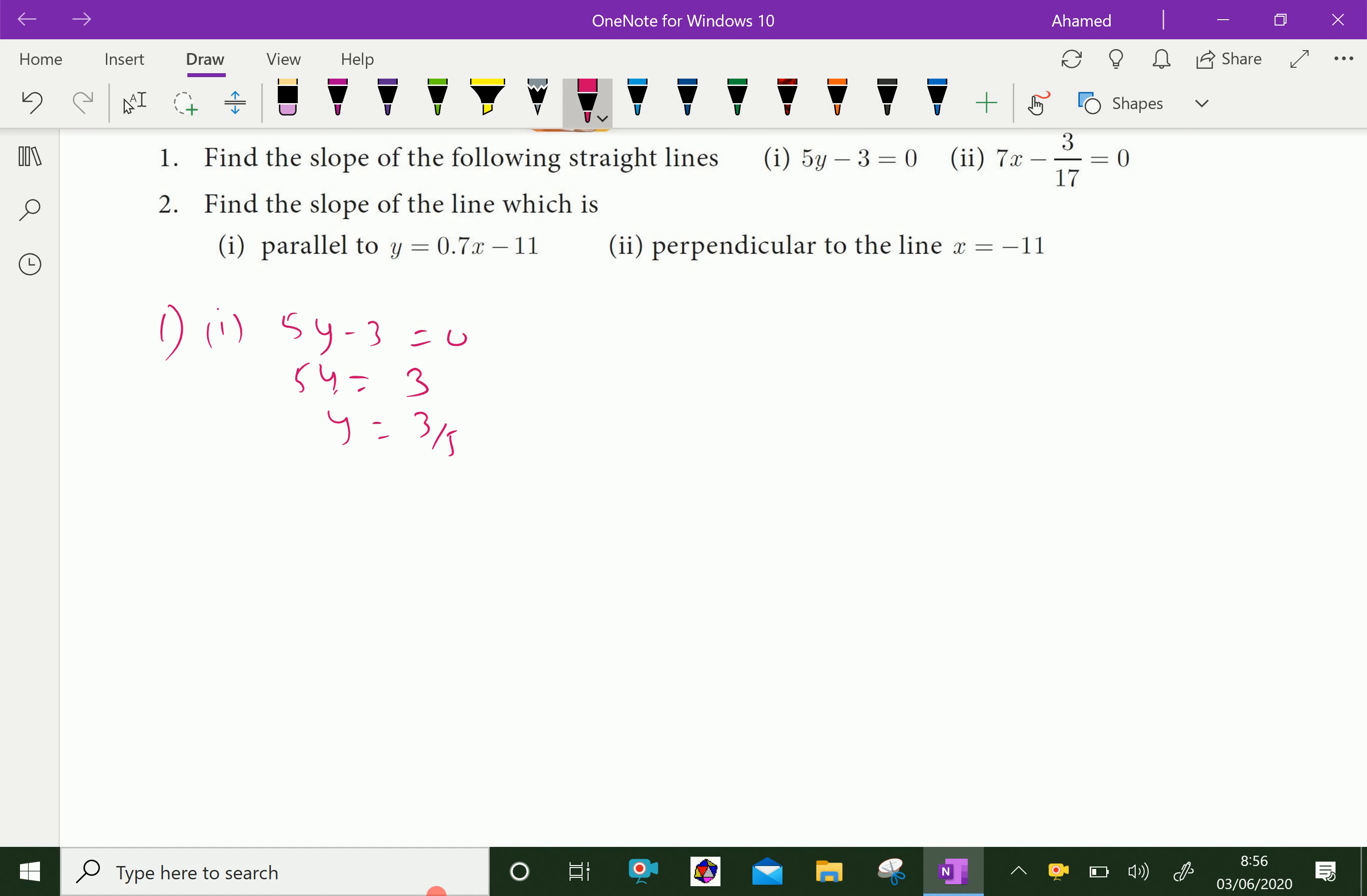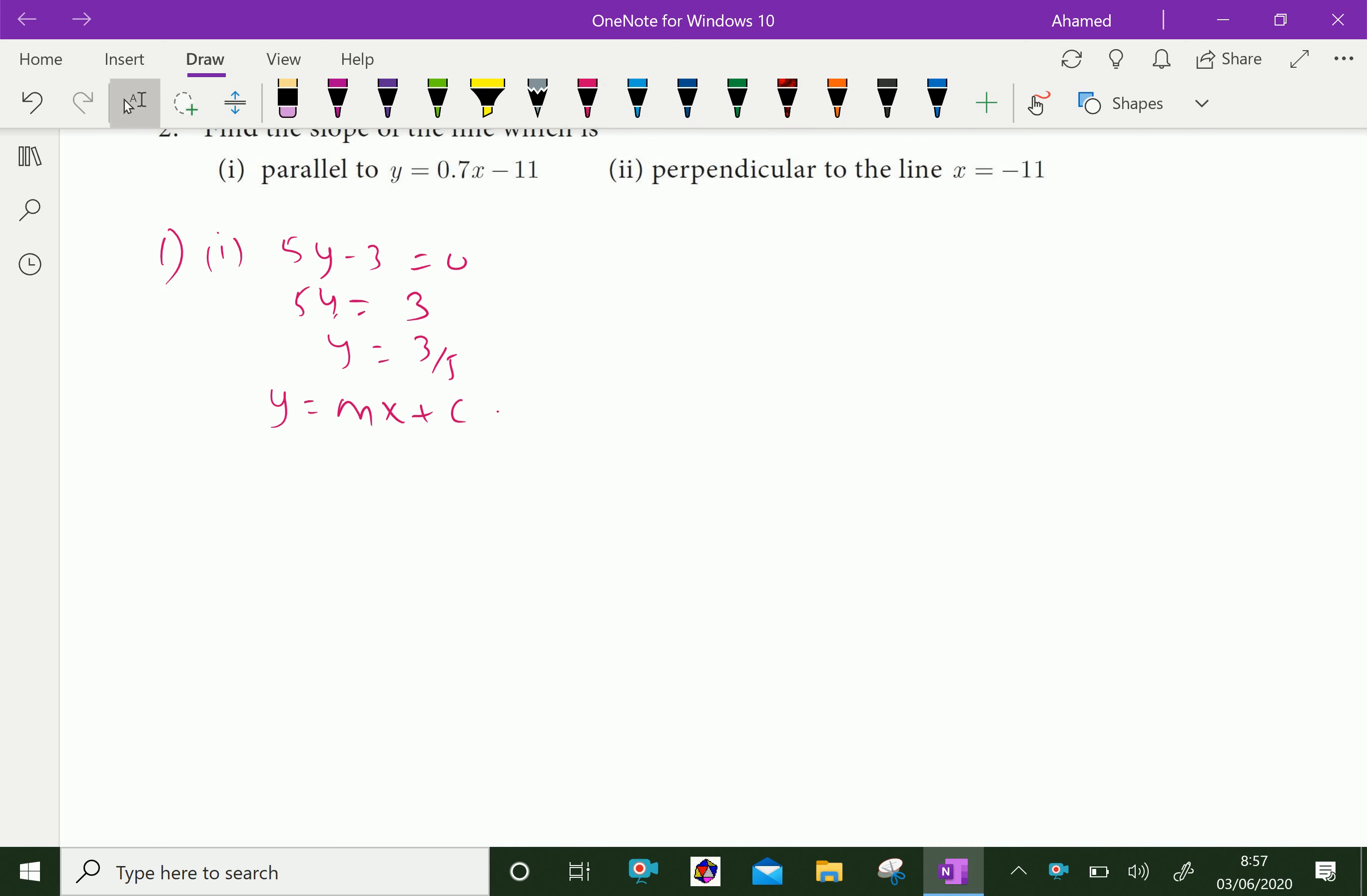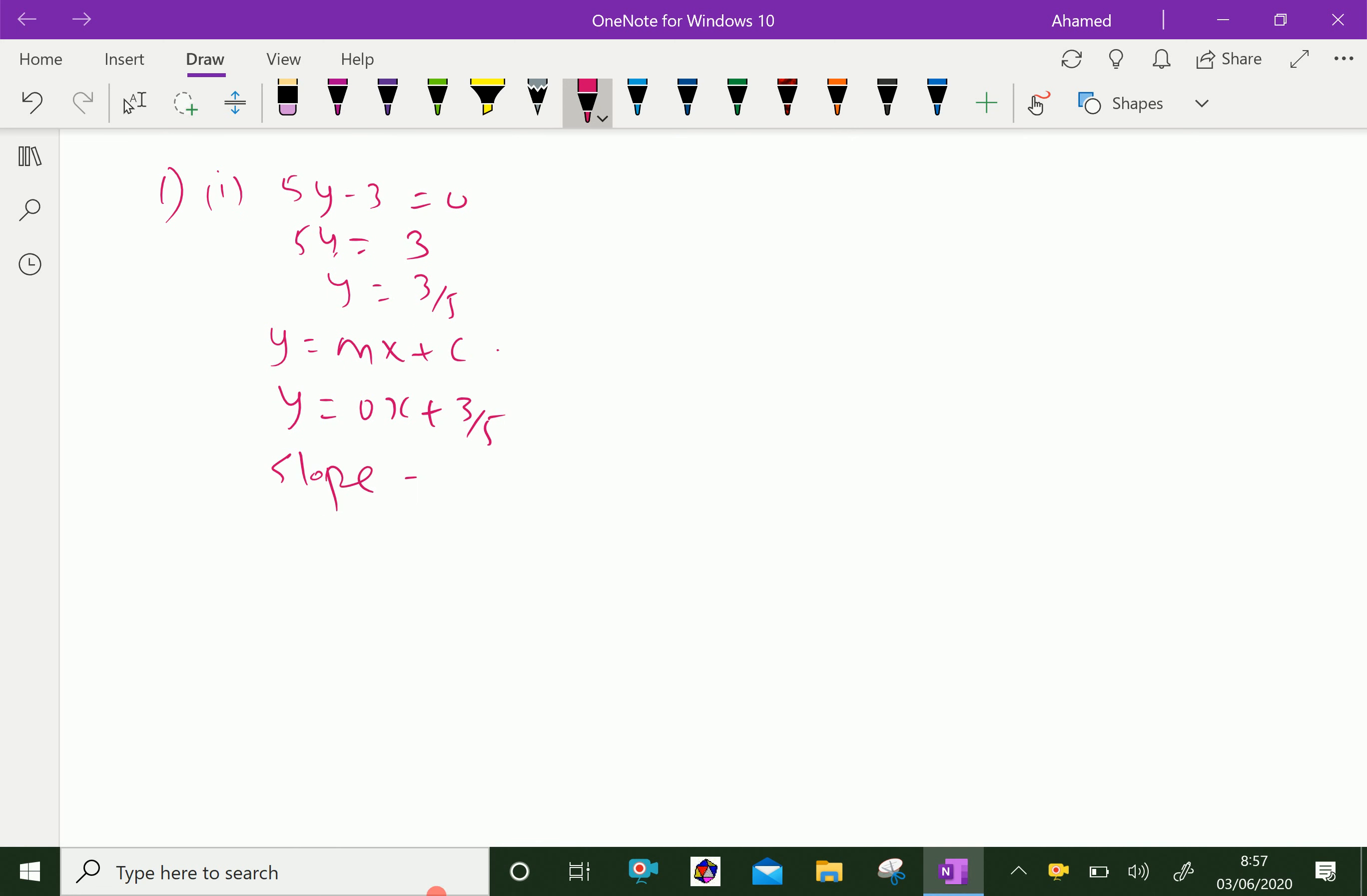We can write the general slope-intercept form of the equation as y = mx + c. Here, we can say y = 0x + 3/5. Therefore, slope = 0.